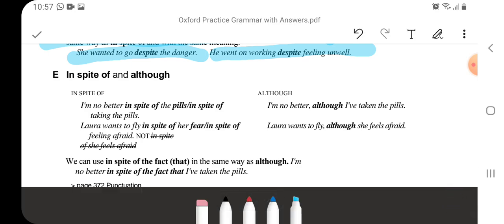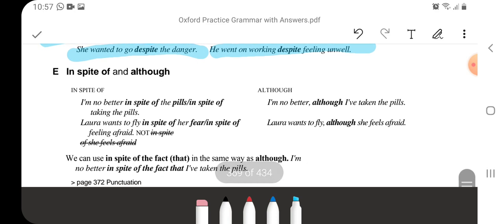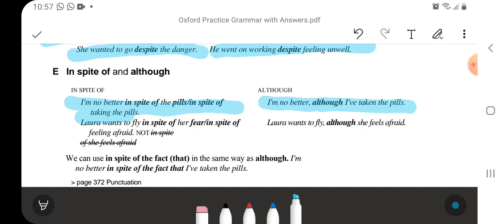In spite of and although, we see the difference. I'm no better in spite of the pills, taking the pills. I'm no better although I have taken the pills. Let's repeat it. I'm no better in spite of the pills. When you will use in spite, you will use I'm no better in spite of the pills. And when you will use in spite of with -ing, you will use I'm no better in spite of taking pills.